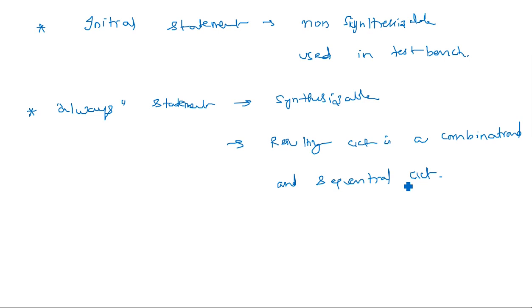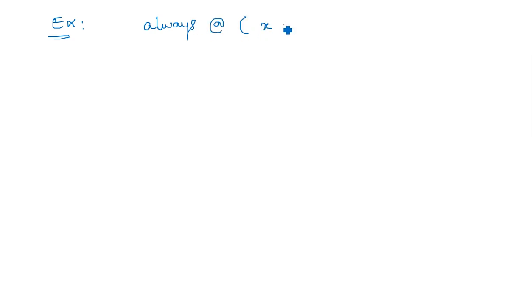For combinational circuits, we generally use the always statement. One more important point: in Verilog, it is all case-sensitive — capital letters and small letters should not be interchanged. For example, we write 'always' in all small letters, followed by the sensitivity list: always @(X or Y or S), then begin.